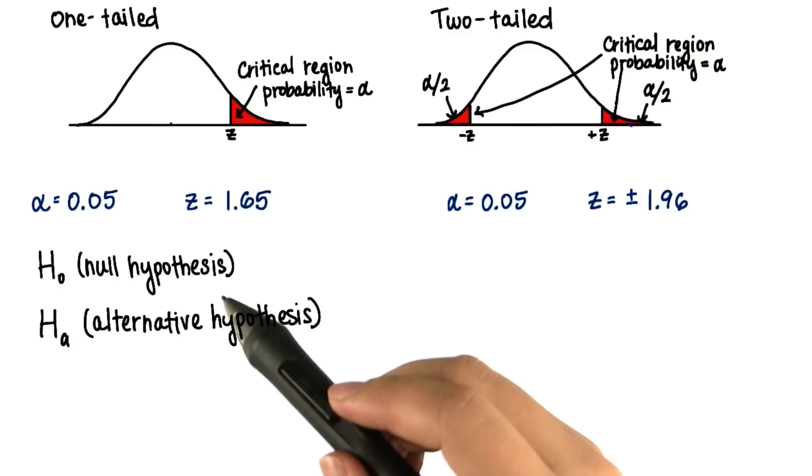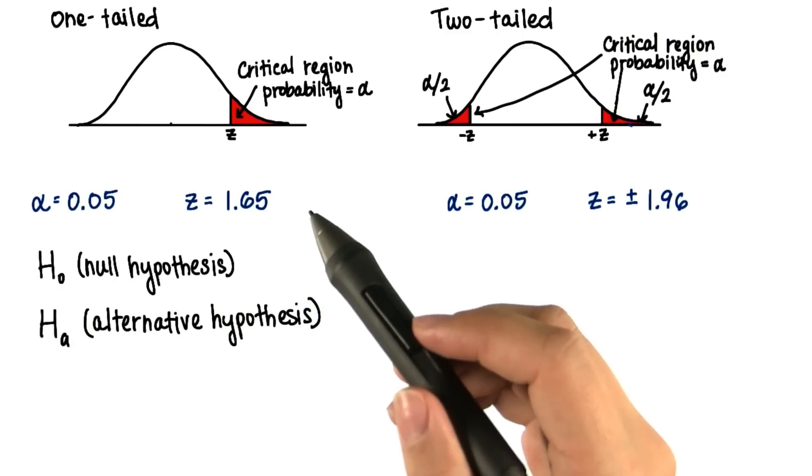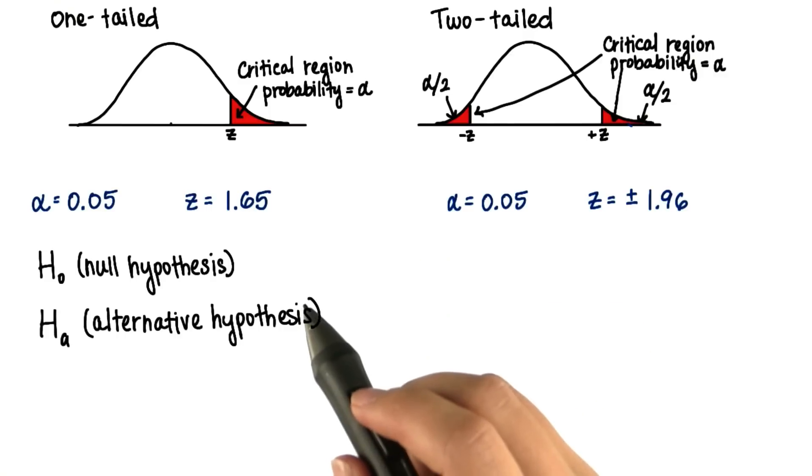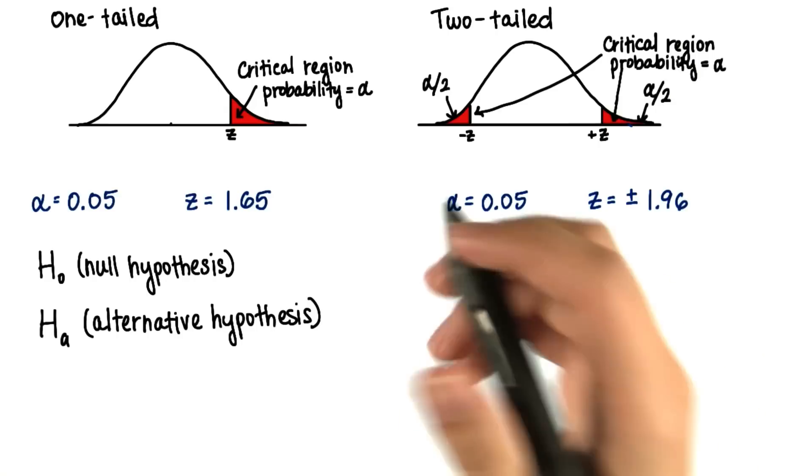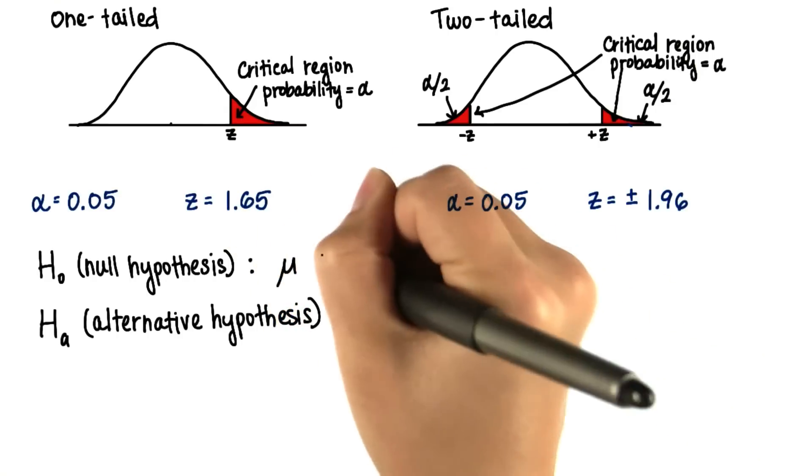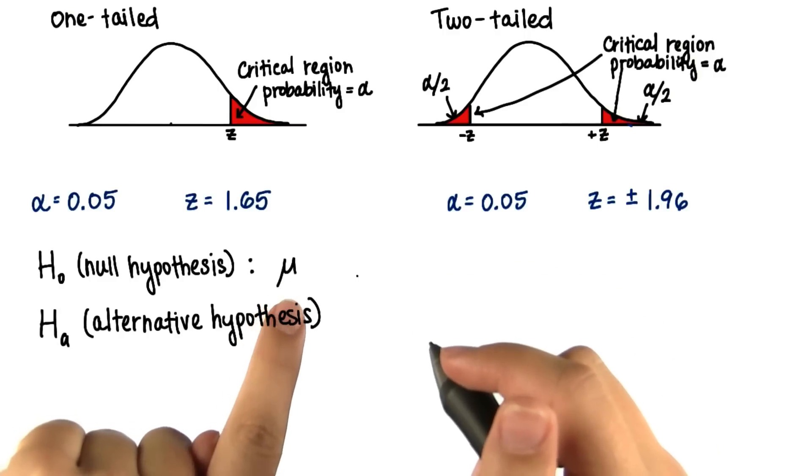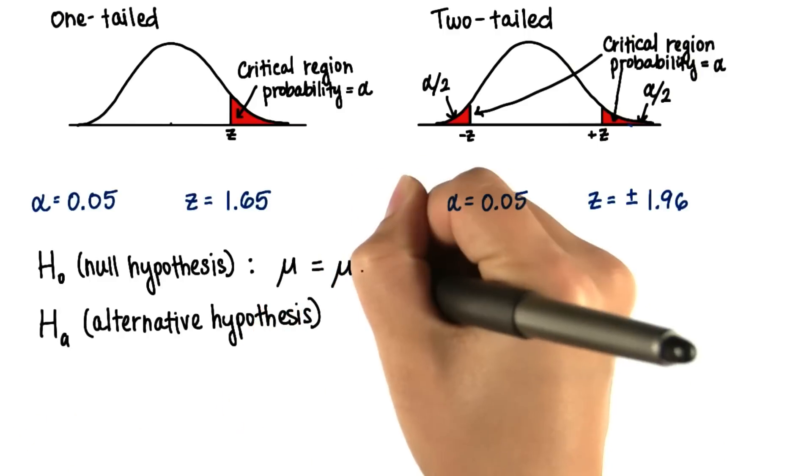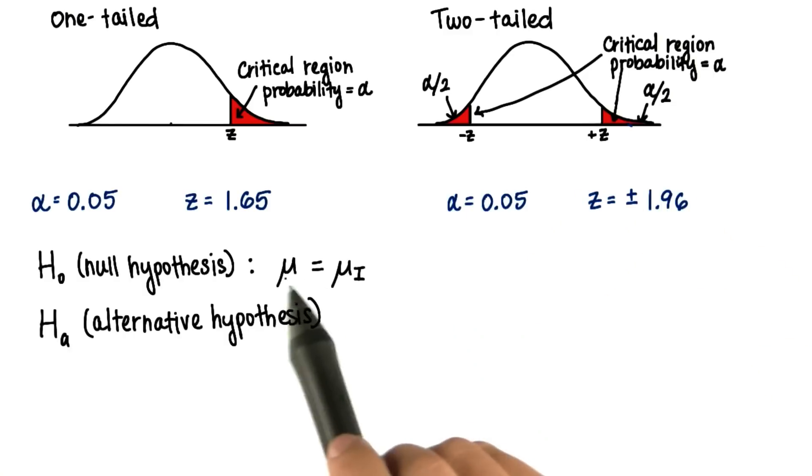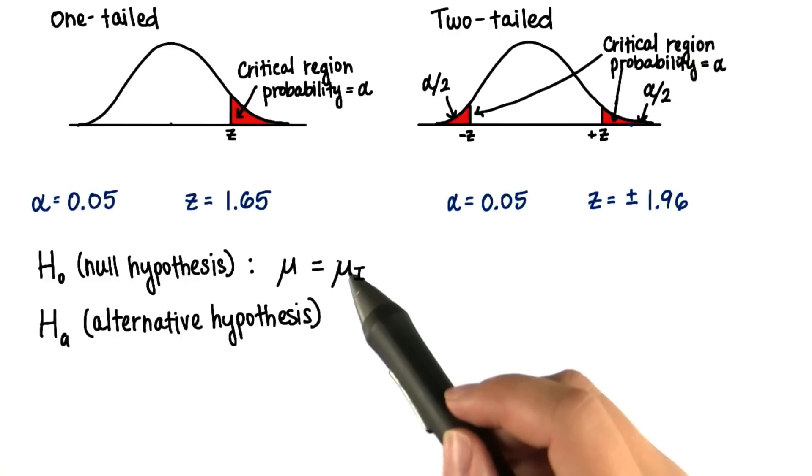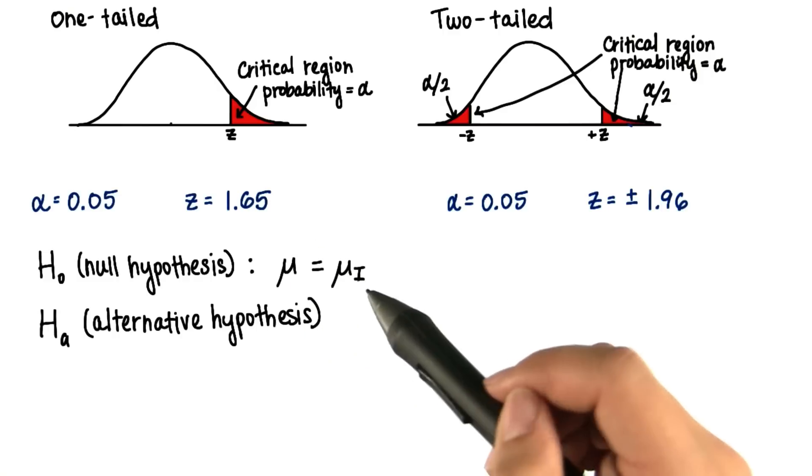The null hypothesis assumes that there is no significant difference between the current population parameters and what will be the new population parameters after some sort of intervention. So we'll notate it like current population parameter μ is equal to the population parameters after the intervention. Where when we say equal, we don't mean exactly equal. We just mean they're not significantly different.